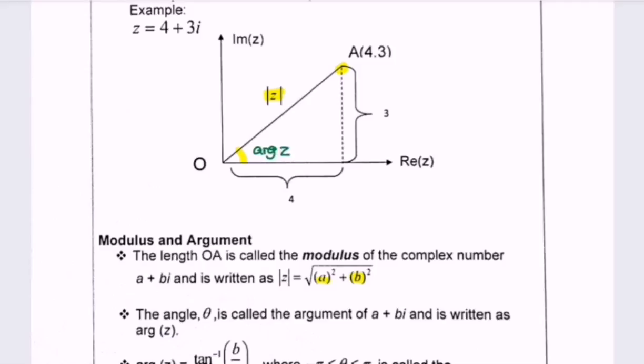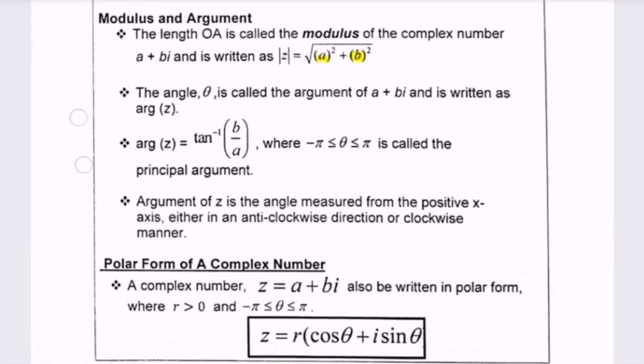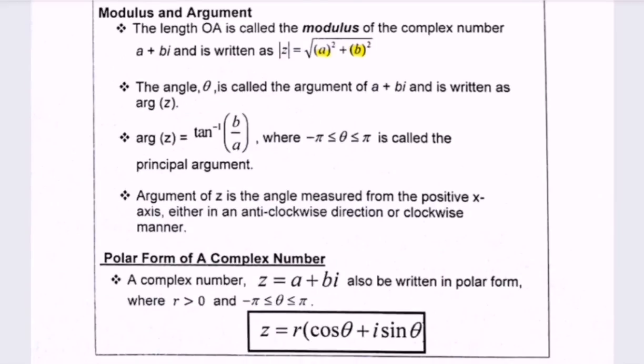So the following are the steps. Argument of z, or we can say it, tangent of b over a, where theta, or the angle, is in between negative pi and pi. It's called the principal argument, or we can say the basic angle.